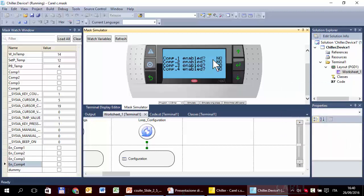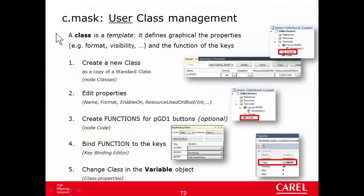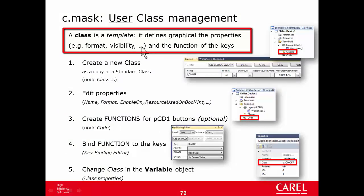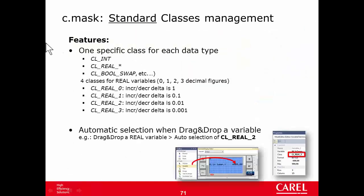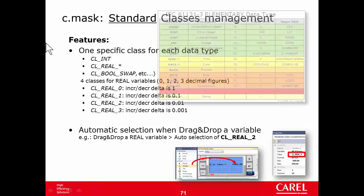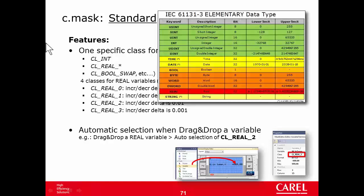A class is a template. It defines graphical properties such as format (input/output), visibility (visible or not visible), and the function of the keys. So far we have used standard classes — there are many, one for each data type: integer, boolean, real, double integer, short integer, and all the others.